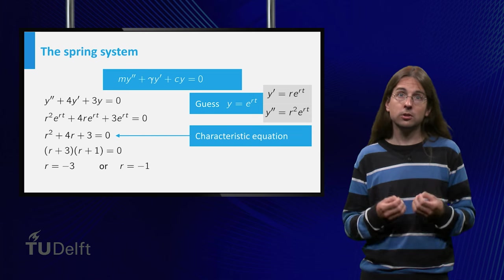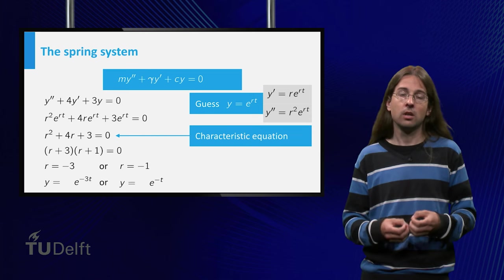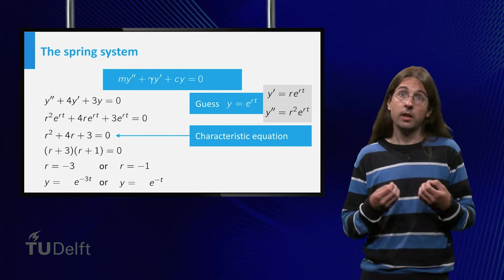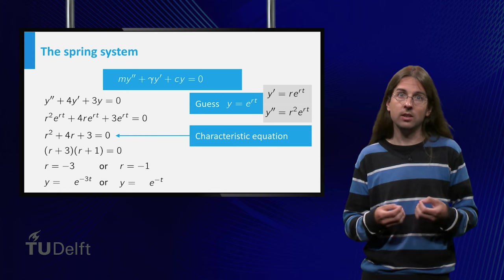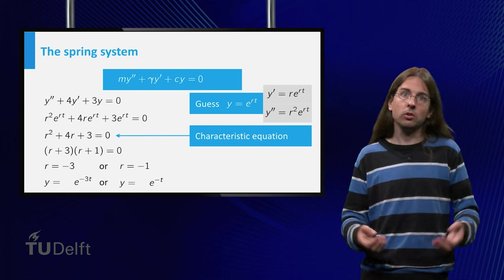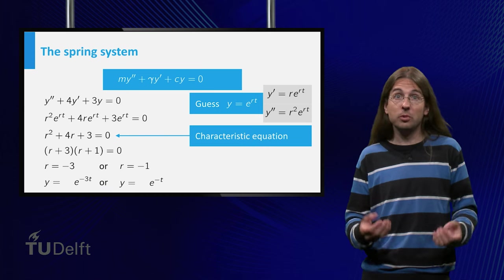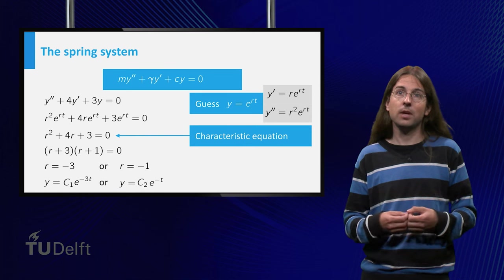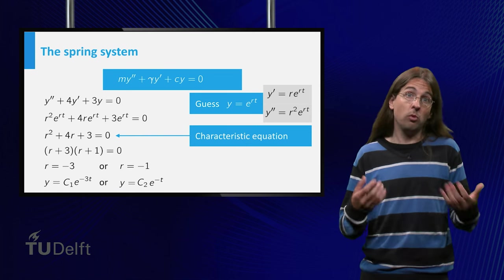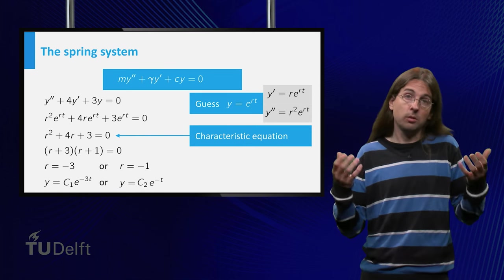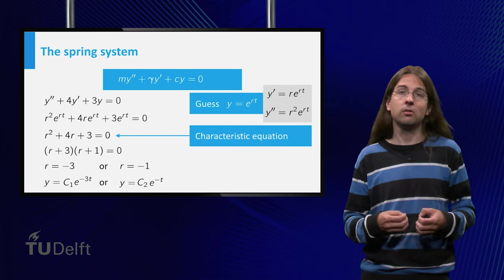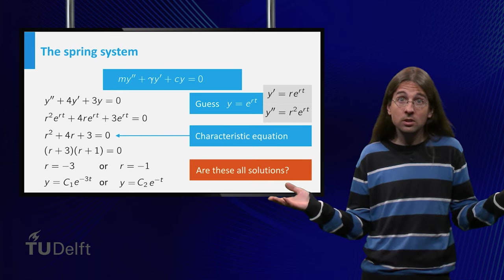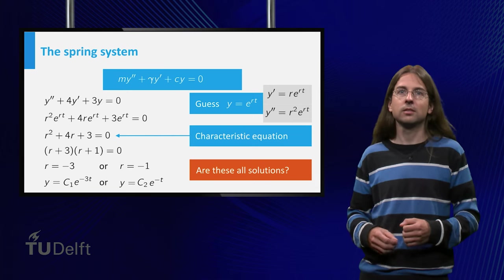We find two solutions to the differential equation: y equals e to the minus 3t and y equals e to the minus t. And of course constant multiples of these solutions — y equals some constant times e to the minus 3t and y equals some possibly other constant times e to the minus t. Are these all solutions? In class you will find out.